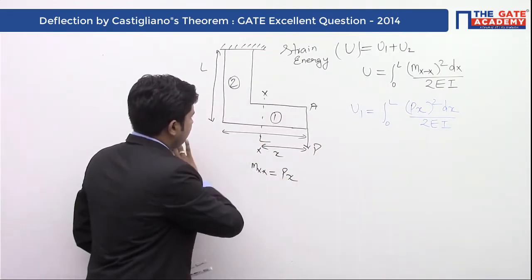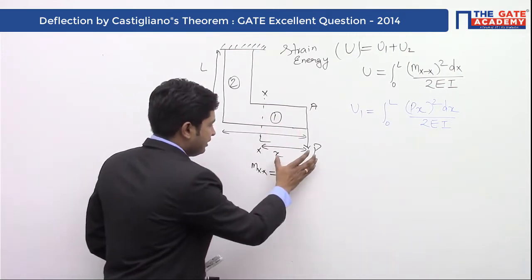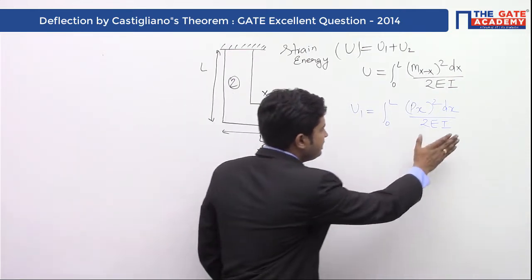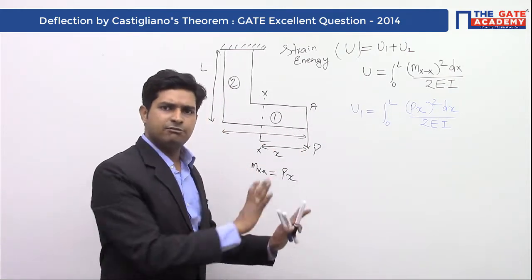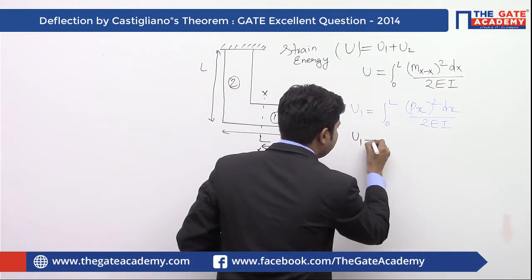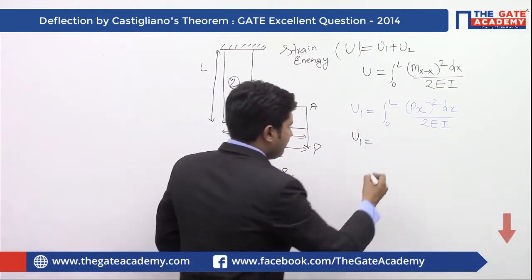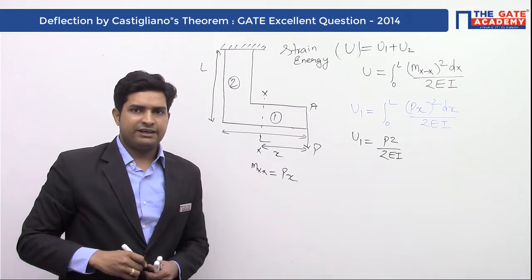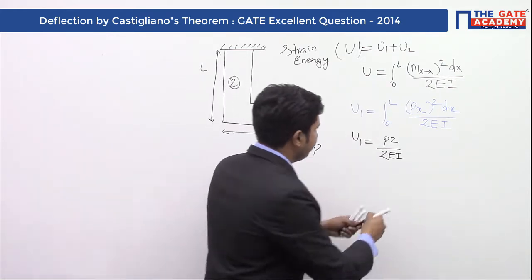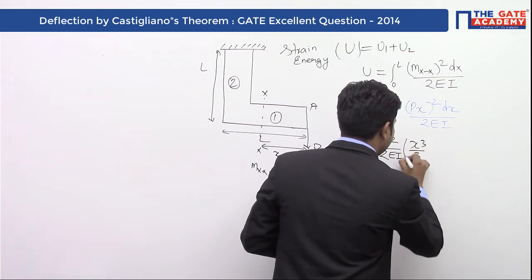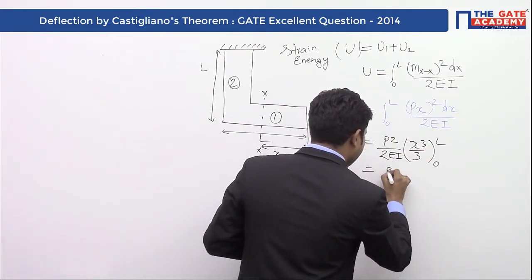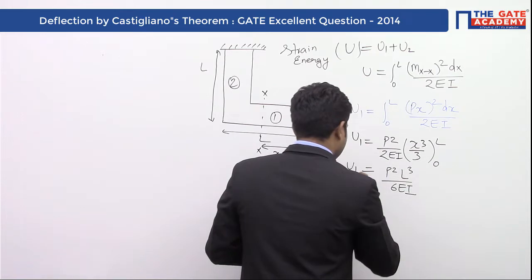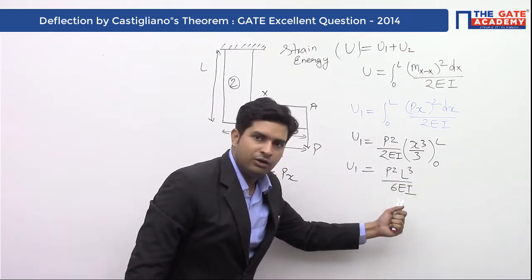For the first part, P is the transverse shear load, and due to the transverse shear load the bending moment is varying in nature. Integrating, the strain energy for part one equals P squared L cubed divided by 6EI.